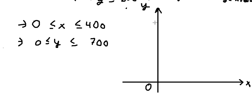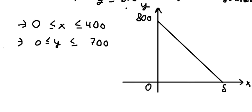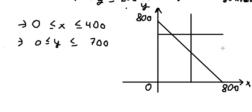We now draw the line Y = negative X plus 800 on the graph. We also draw X ≤ 400 as a vertical line and Y ≤ 700 as a horizontal line. The feasible region is the area satisfying all three constraints simultaneously.